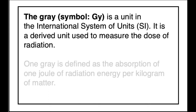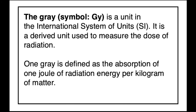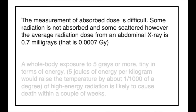The unit, the Grey, is a unit which takes some of these differences into account. One Grey is defined as the absorption of one joule of radiation energy per kilogram of matter. To give a brief concept of what this unit might mean, an abdominal or chest x-ray is likely to deliver around about 0.7 milligrays.